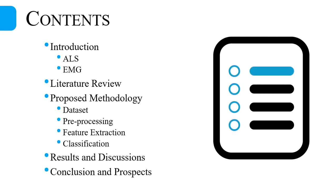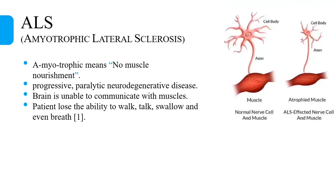The contents include introduction of neuromuscular disorder, review of previous studies, proposed method of classification, and results and conclusion. Let's start with the introduction of neuromuscular disorder, that is ALS.